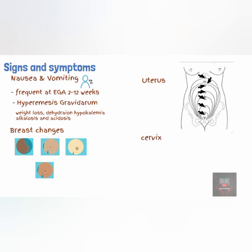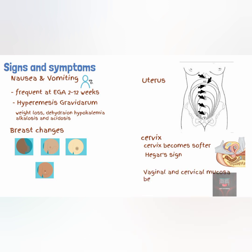The cervix also becomes softer during pregnancy. A non-pregnant cervix is said to feel like the cartilage of the nose, while a pregnant cervix feels like the lips of the mouth. This cervical softening is referred to as Hegar's sign and is due to reduction in the amount of collagen and accumulation of water in the cervix. There is bluish discoloration of the vagina and cervical mucosa due to vascular congestion in pregnancy, known as Chadwick's sign. This vascular congestion is usually as a result of estrogen.